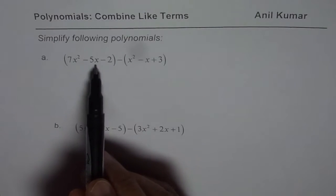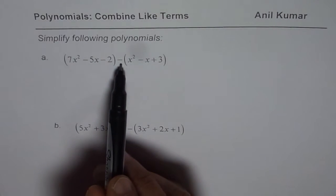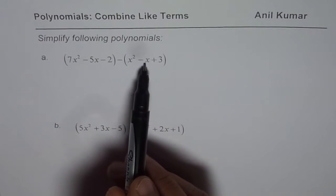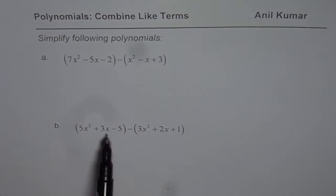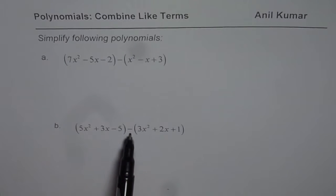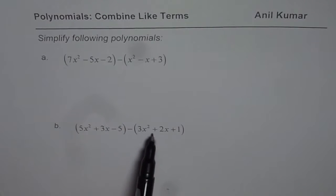First one is 7x squared minus 5x minus 2 minus within brackets x squared minus x plus 3. The second one is 5x squared plus 3x minus 5 minus within brackets 3x squared plus 2x plus 1.